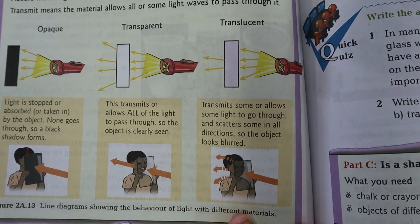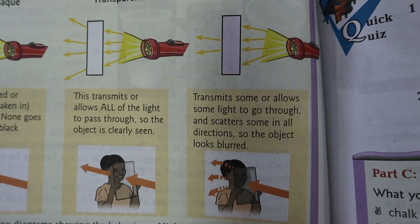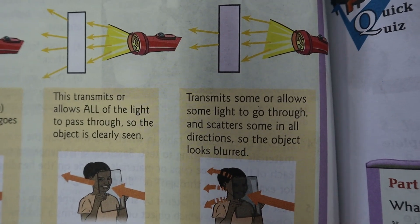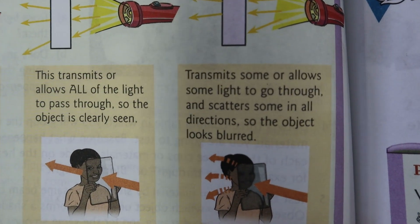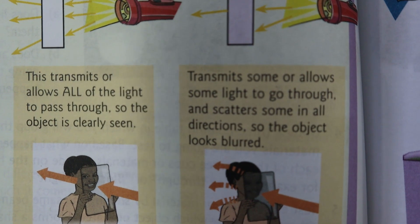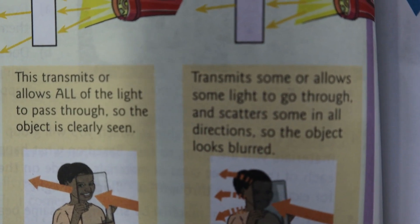Translucent materials transmit some light, or allow some light to go through, and scatter some in all directions, so the object looks blurred.